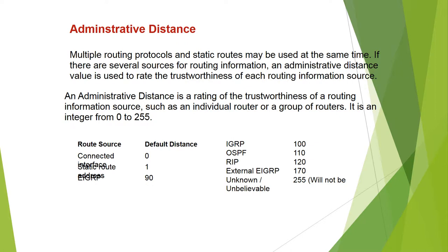Route source and default administrative distances: Connected interface — 0; Static route — 1; EIGRP — 90; IGRP — 100; OSPF — 110; RIP — 120; External EIGRP — 170; Unknown — 255 (will not be used).